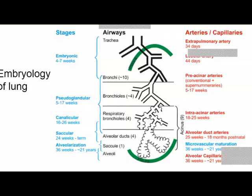The canalicular stage happens between 16 to 26 weeks. Multiple bronchioles and terminal bronchioles are formed, along with type 1 and type 2 pneumocytes. Towards the end of this stage, surfactant formation occurs, increasingly seen in amniotic fluid. The saccular stage is from 24 weeks to term, during which alveolar ducts are found — this is why we want every child to reach term. Finally, the alveolarization stage happens after 36 weeks up to about 21 years.